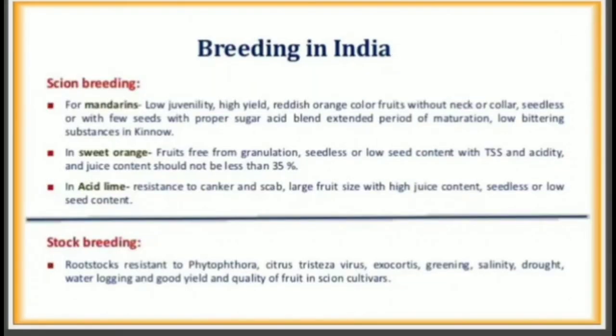Breeding in India — Scion Breeding: For mandarins: low juvenility, high yield, reddish orange color, fruits without neck or collar, seedless or with few seeds, proper sugar-acid blend, extended period of maturation, low bittering substances. In sweet orange: fruits free from granulation, seedless or low seed content, with appropriate TSS and acidity, and juice content should not be less than 35%.